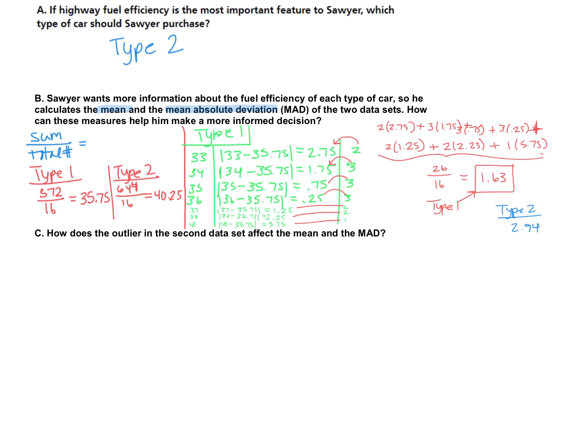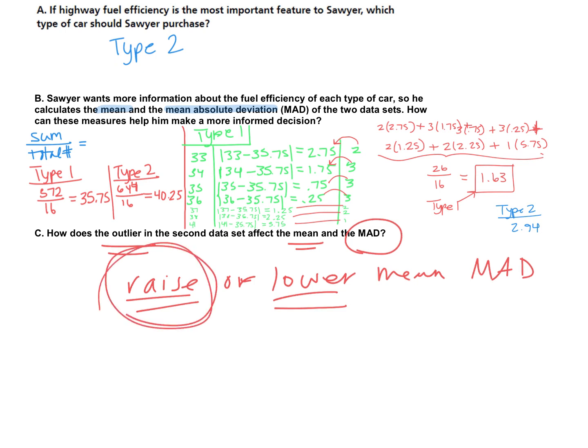And without having - we could calculate all this again. I won't take time for that in this video. But I just want you to know how an outlier will affect a mean and the mean absolute deviation. Any outlier will raise or lower a mean or a mean absolute deviation. How do you know if it's going to raise it or lower it? Well, if it's a higher outlier, it's going to raise it. If it's an outlier on the lower end, it will lower the mean. So because the outlier was a higher number in the second data set, it will absolutely raise the mean and the mean absolute deviation.